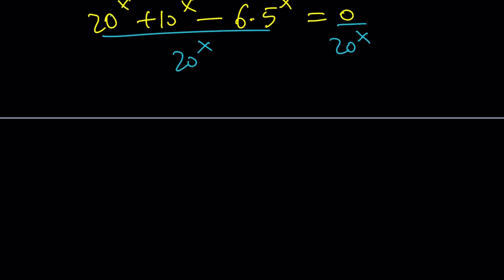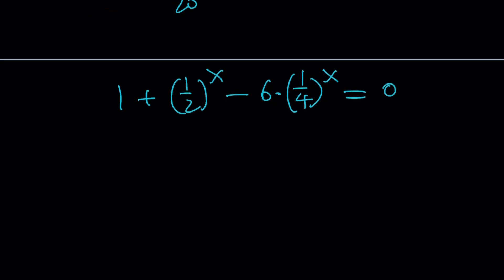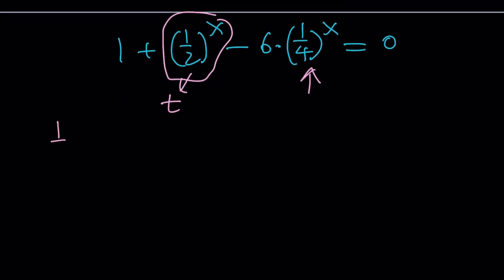20 to the x divided by 20 to the x is 1. This is going to be 1 half to the power of x minus 6 times 5 over 20, which is 1 fourth, to the power of x. This turns into something nice. You know what that is? A quadratic equation. A hidden quadratic. Why? Because if you call this t, this becomes t squared. Let's go ahead and do this. 1 half to the x equals t. Don't forget that.